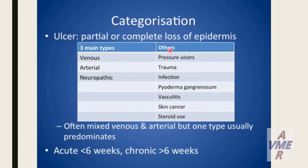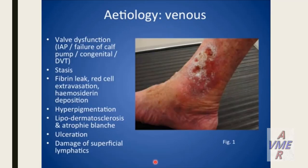Other causes include pressure ulcer, trauma, infection, pyoderma gangrenosum, vasculitis, skin cancer, and steroid use. The duration of the ulcer less than 6 weeks means it is an acute ulcer, and more than 6 weeks means it is a chronic ulcer.